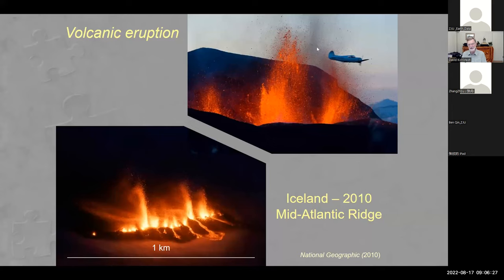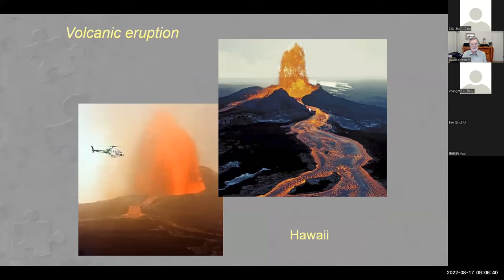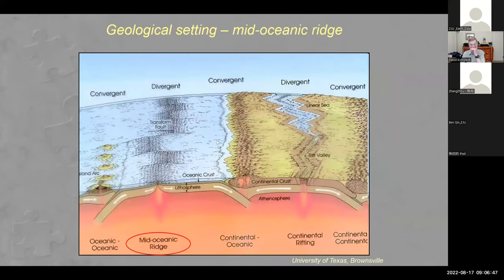That Iceland eruption pretty much shut down air travel between North America and Europe at the time because it cut off many flight paths. We also see volcanic eruptions in places like Hawaii. But today I'm going to focus primarily on one important geological setting — the mid-ocean ridge — and ask how do we get melt from the mantle source region, which might be 100 or more kilometers below the surface, to erupt at Earth's surface, looking at the various processes and pathways involved.